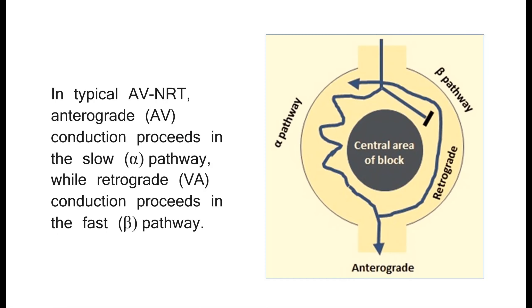In typical AVNRT, anterograde (AV) conduction proceeds in the slow (alpha) pathway, while retrograde (VA) conduction proceeds in the fast (beta) pathway.